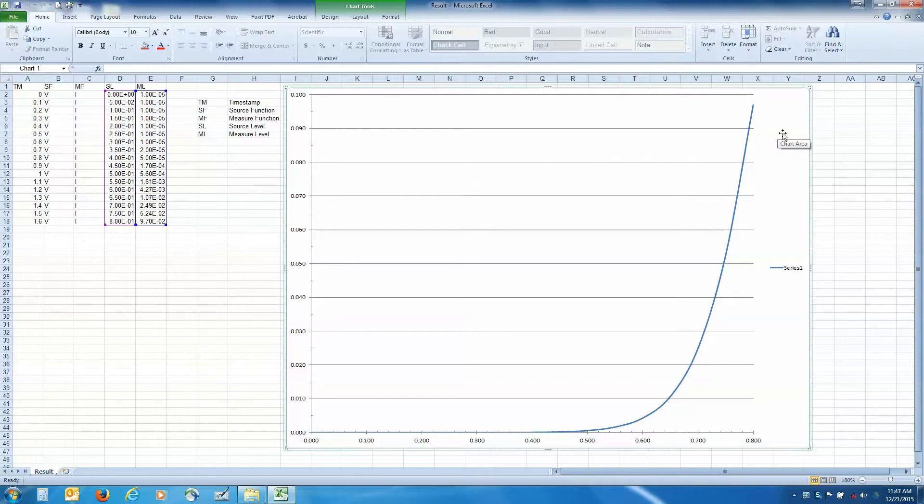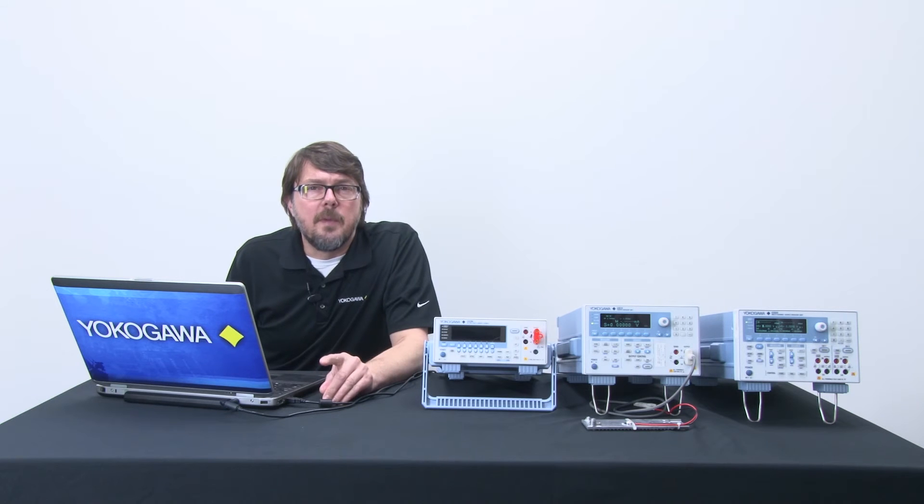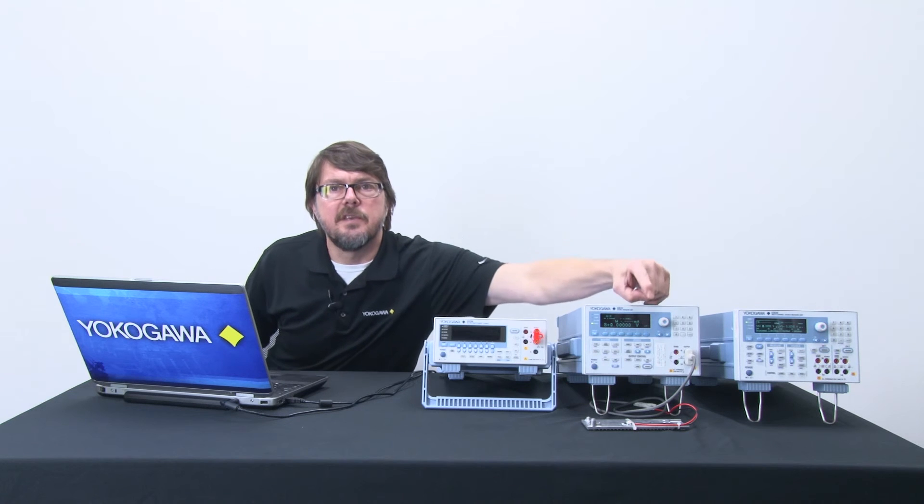Up next, let's go to the Curve Tracer software and sweep an LED with the GS610. Next I'm going to perform a very similar sweep, this time on a light emitting diode, which I've mounted to a heat sink here.